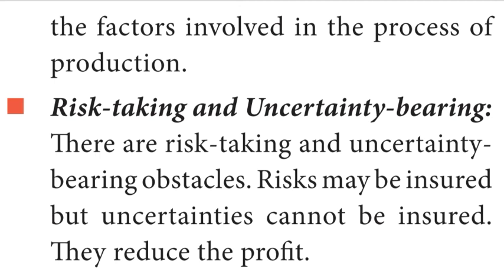Fourth, control, direction and supervision. An organizer controls so that nothing prevents the organization from achieving its goal. He directs the factors for better results and supervises for the efficient functioning of all factors involved in the production process. Characteristics of organization — risk taking and uncertainty bearing: According to Haveli, a business is nothing but a bundle of risk. Products are produced for future demand; the future is uncertain while investments are made in the present. A prudent entrepreneur forecasts future risk scientifically. According to Knight, one of the important functions of an entrepreneur is uncertainty bearing. Risk may be insured but uncertainties cannot be insured — they reduce profits.